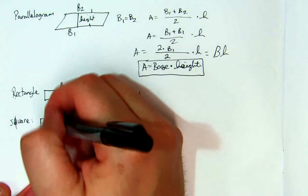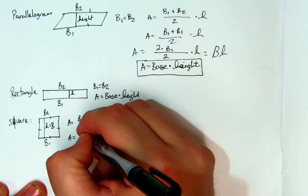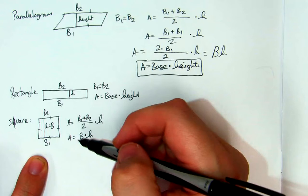My area is equal to base times the height. Well, the base and the height are the same thing. So my area would be equal to a base squared, or traditionally we say side squared.